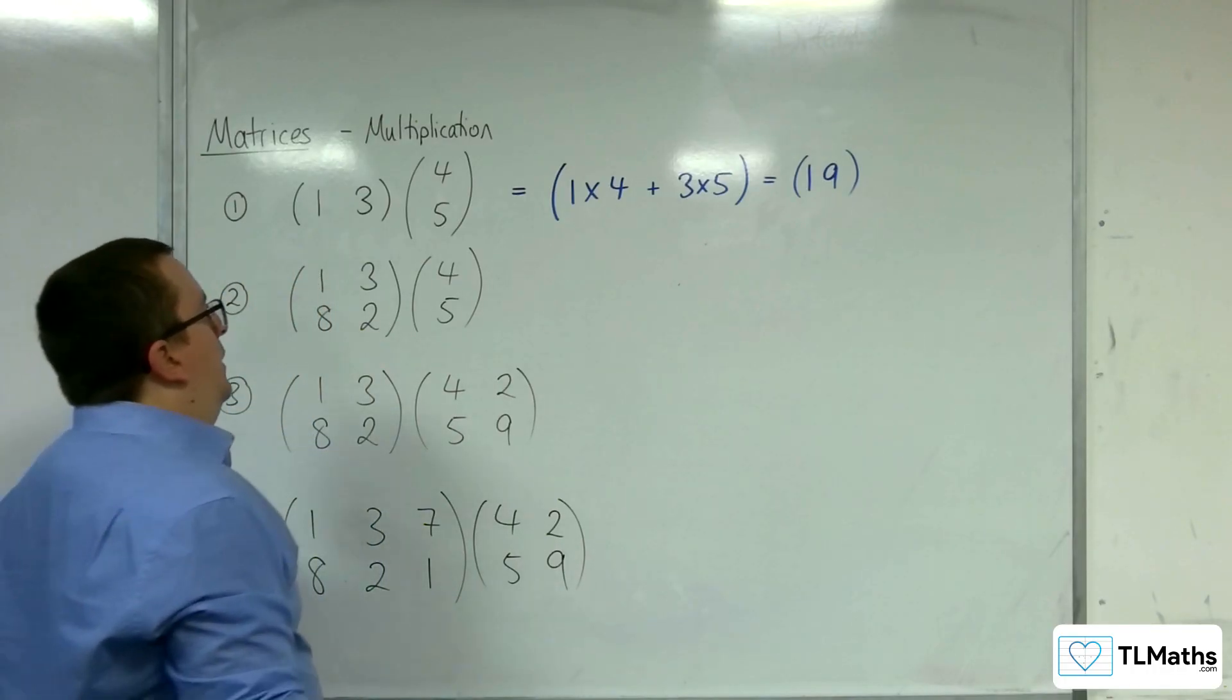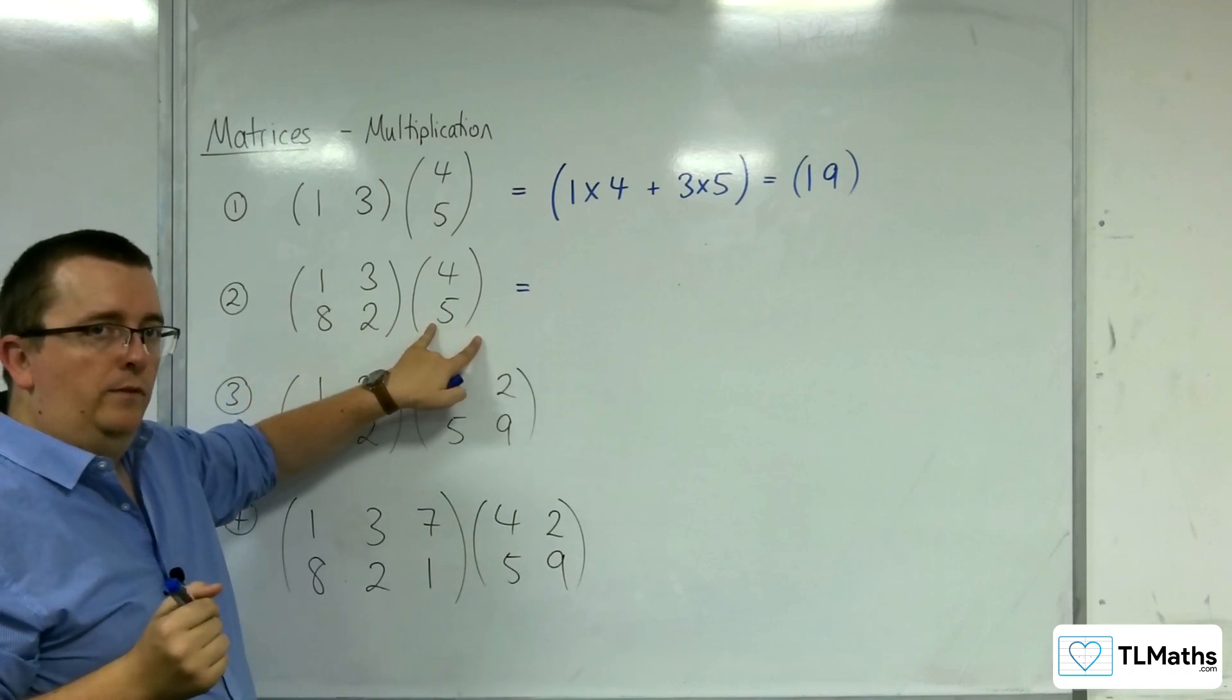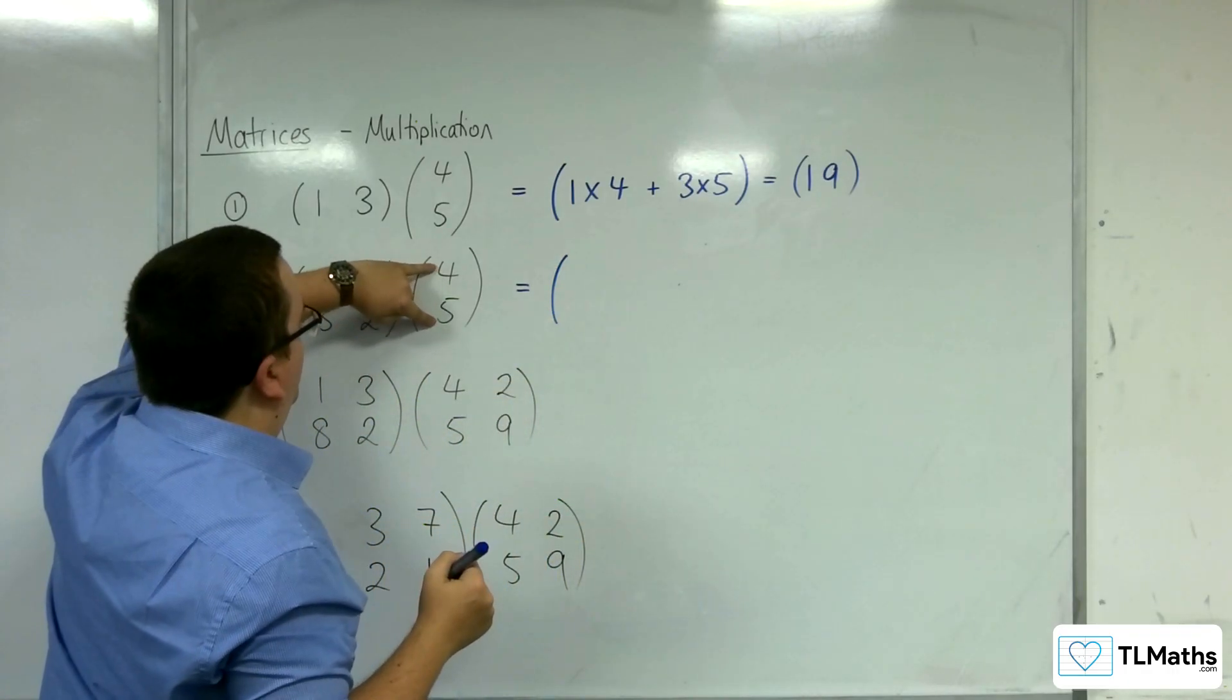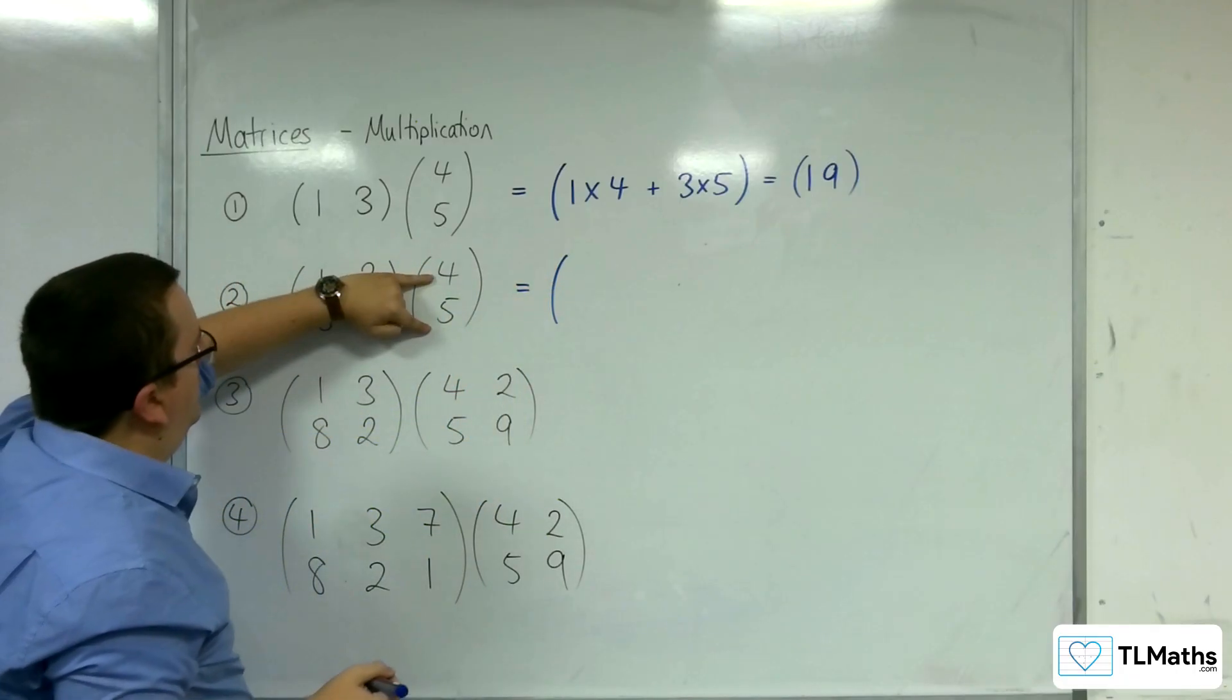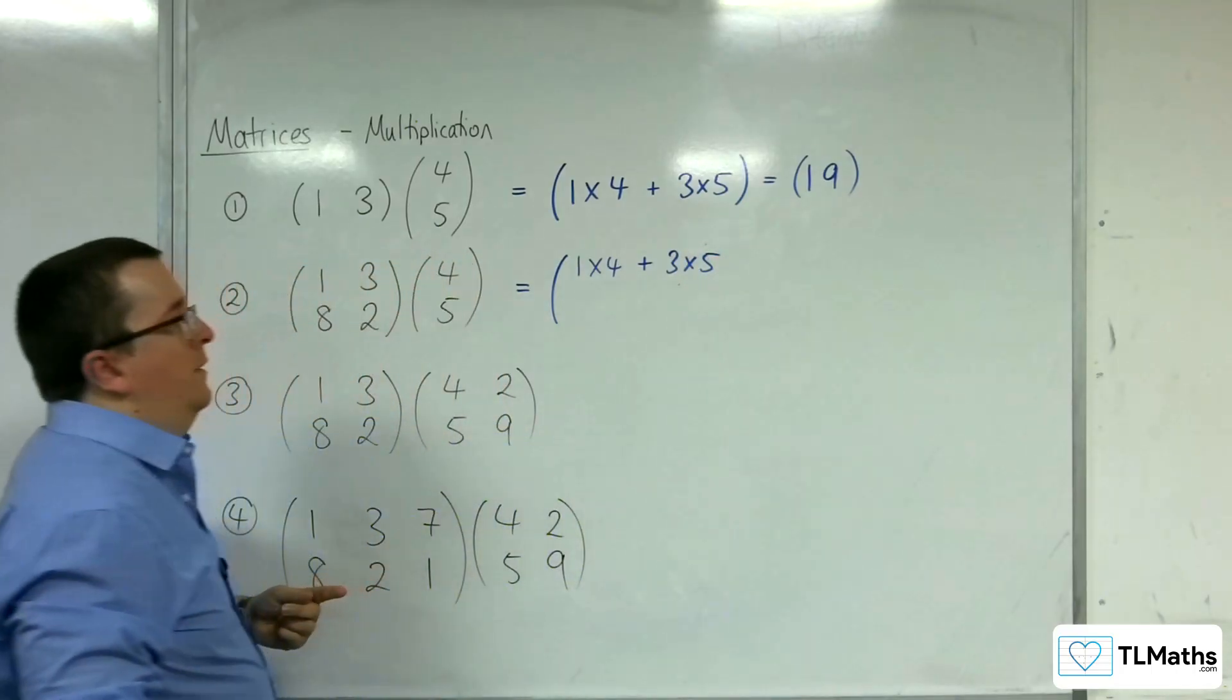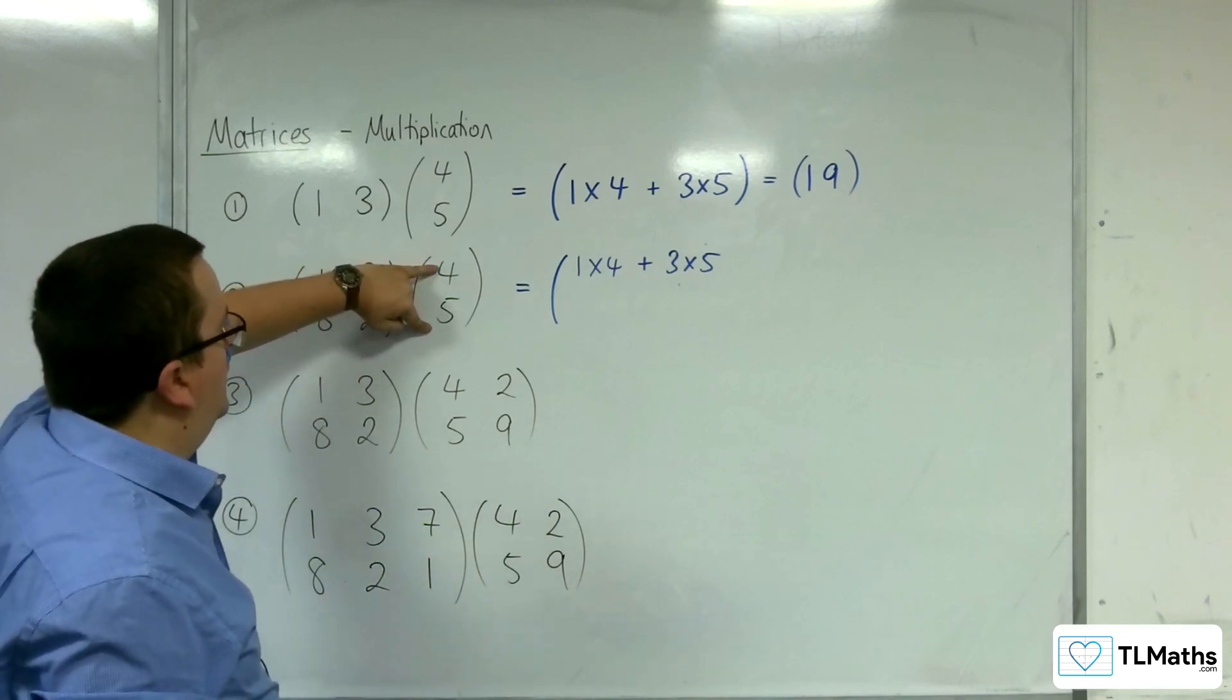So, what happens when we multiply this 2 by 2 matrix by this 2 by 1 matrix? We're going to take this column, 1, 3, and multiply it with the 4, 5, and you then add, just as we did there. So, 1 times 4 plus 3 times 5, that's the element in the top row.